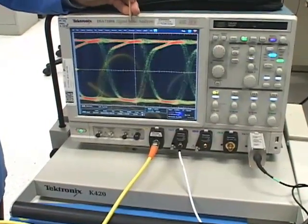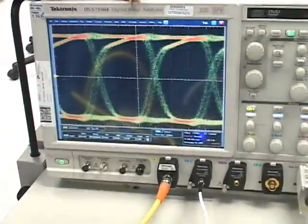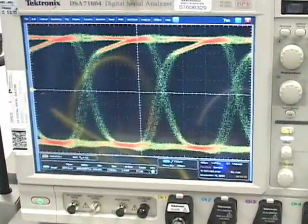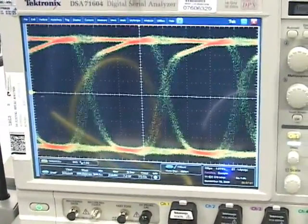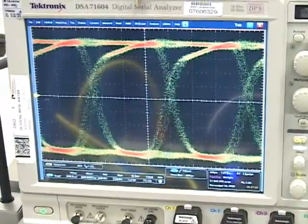Now, SMPTE has two different types of jitter that are specified. The timing jitter involves all the jitter in a frequency band from 10 Hz up through one tenth of the clock rate, or 300 MHz.